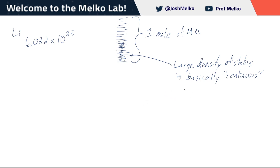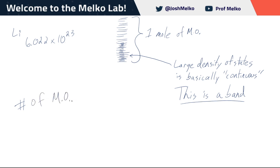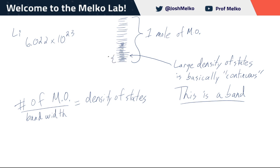We call this a band when the states are so closely packed. The number of molecular orbitals per unit bandwidth is the official density of states — you'll see this in solid state chemistry quite a bit. How many molecular orbitals are there in this area? Count them up, then divide by the overall energy spread from the top state to the bottom. That ratio is the density of states.